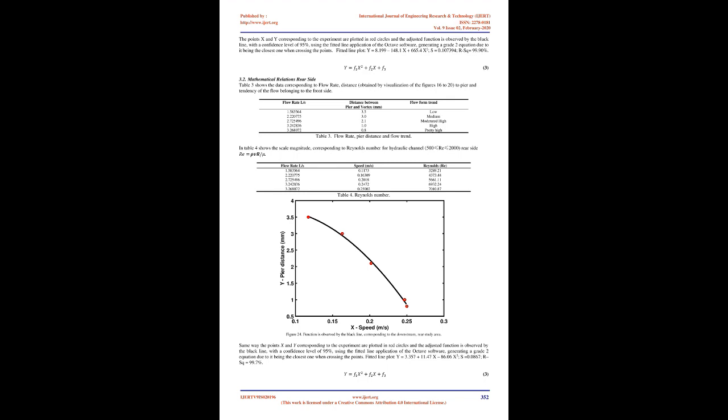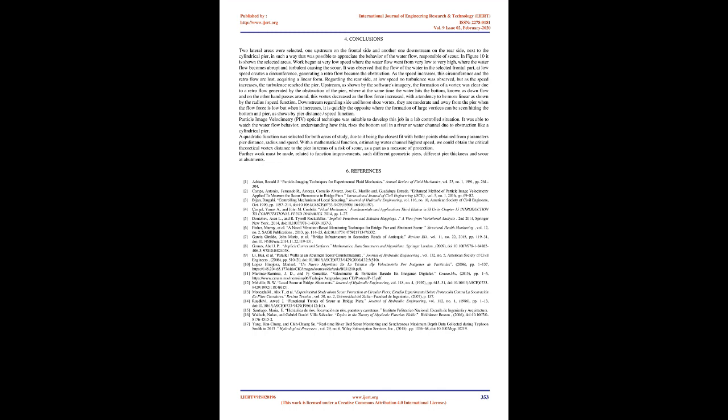Upstream, the software imagery clearly showed the formation of a vortex due to retro flow generated by the pier obstruction, while the water simultaneously hits the bottom (downflow) and passes around. This vortex decreased as the flow force increased, tending toward a more linear form, as shown by the radius-speed function. Downstream, the horseshoe vortex is moderate and away from the pier at low flow, but when flow force increases, large vortices can be seen hitting the bottom and pier, as shown by the pier distance/speed function.